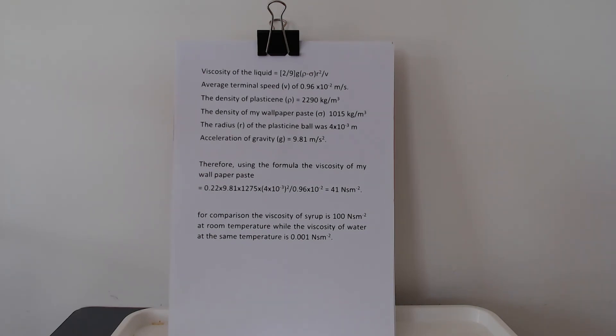I took some readings earlier off camera and got an average terminal speed V of 0.96 times 10 to the minus 2 meters per second. The density of the plasticine rho was 2,290 kilograms per cubic meter. And the density of my wallpaper paste, sigma, was 1,015 kilograms per cubic meter. The radius of the ball, R, was 4 times 10 to the minus 3 meters. And the acceleration due to gravity, G, we will take as 9.81 meters per second squared.